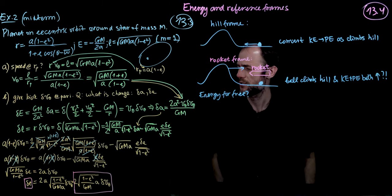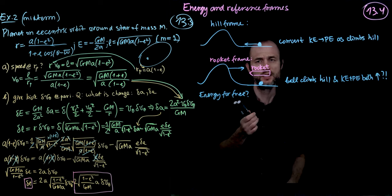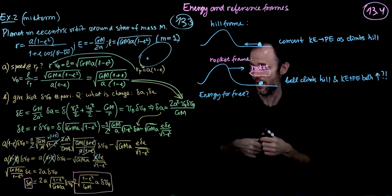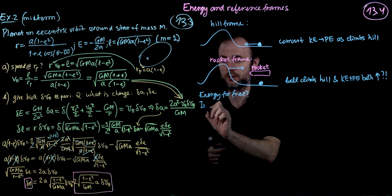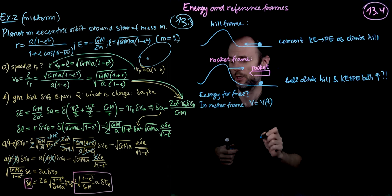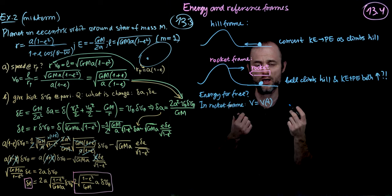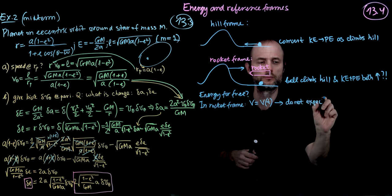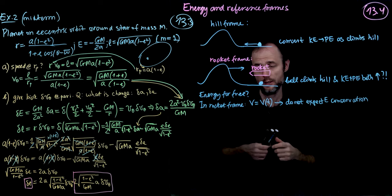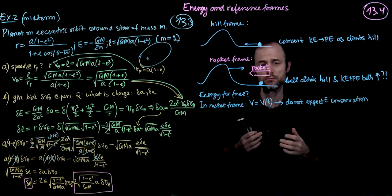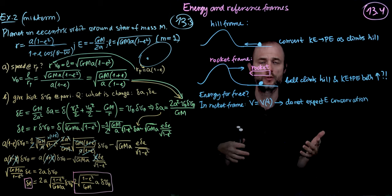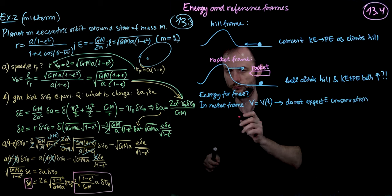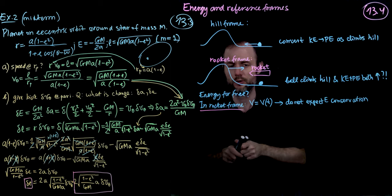The solution to this seeming paradox is that in the rocket frame, the hill is time-dependent, and therefore the potential in the rocket frame is time-dependent. Because the potential is not independent of time, the energy is not supposed to be conserved. So that is okay. Now let us try to figure out what would be a conserved quantity in the rocket frame.